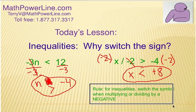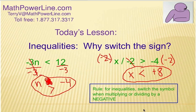So the rule is, for inequalities, switch the symbol when multiplying or dividing by a negative. That's an example of when you use the rule. Let's take a look at why. Why does this rule work, and that you have to kind of memorize it and use it in your inequalities?